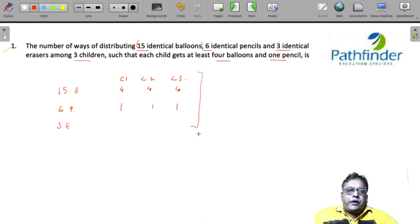If you carefully look at it, since each child has to have 4, 4, 4 balloons, you already pre-distribute. And since they are identical, there will be one way of distributing these.